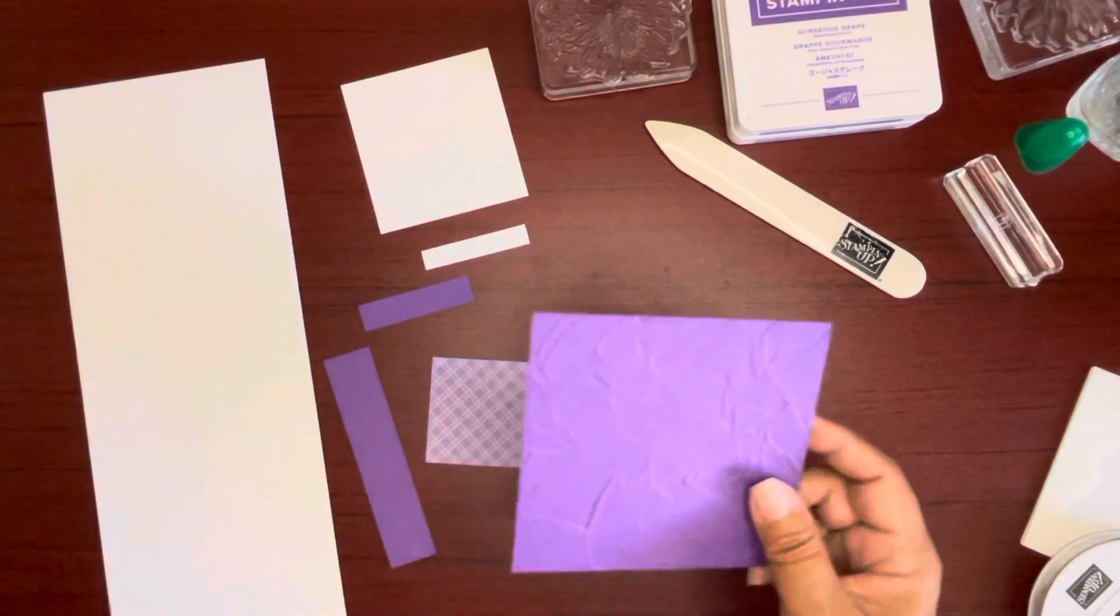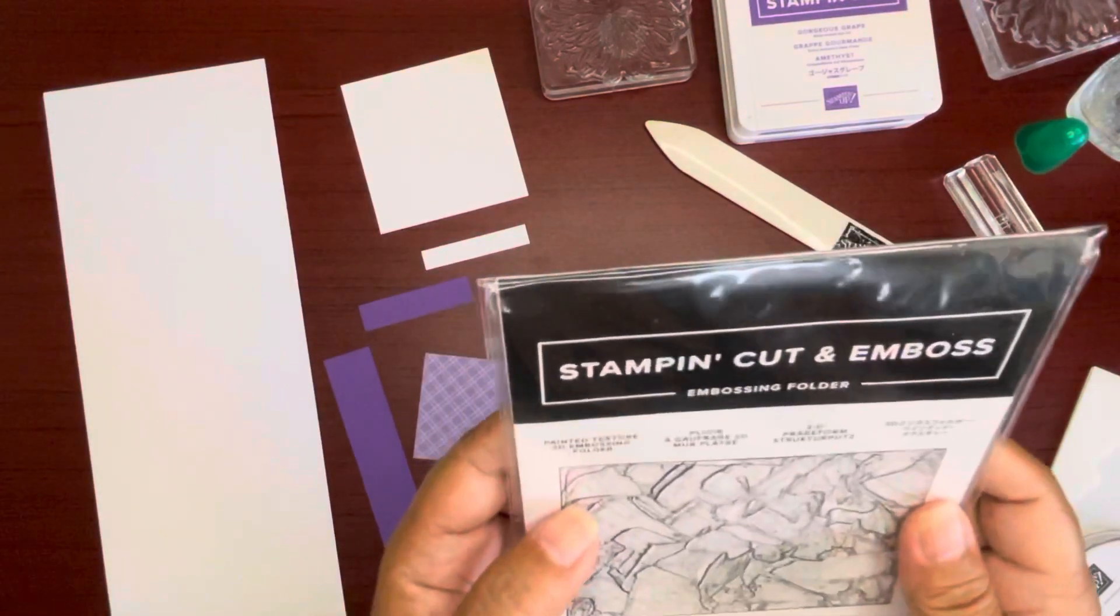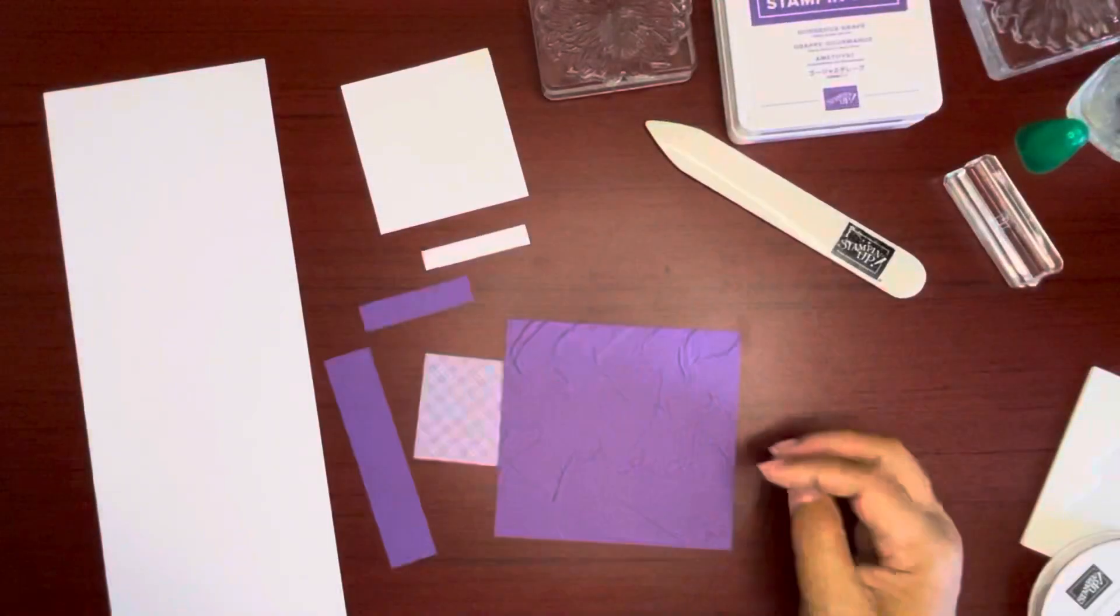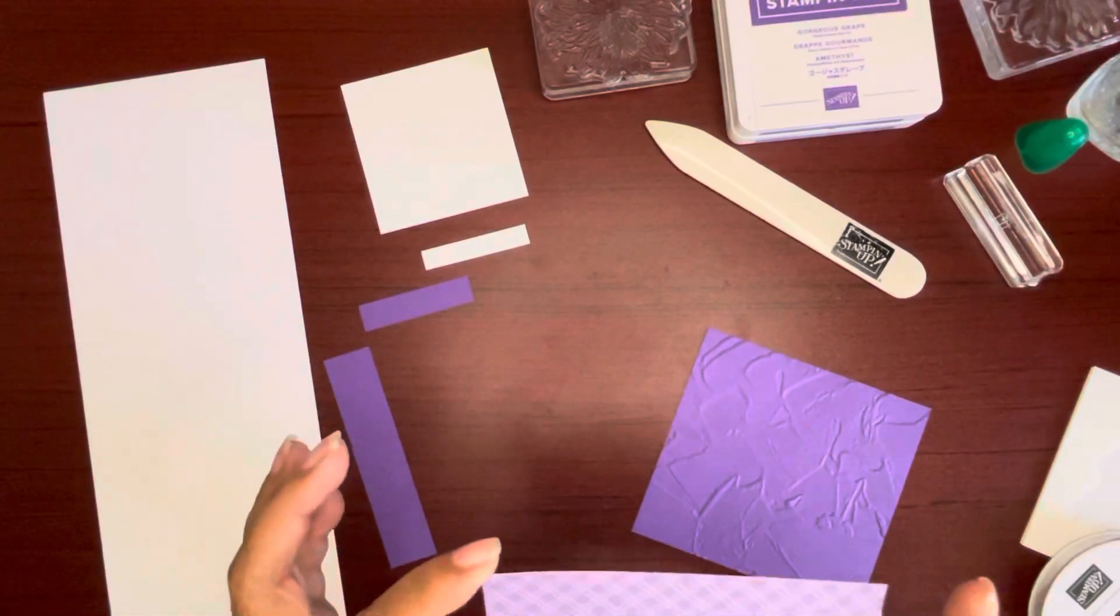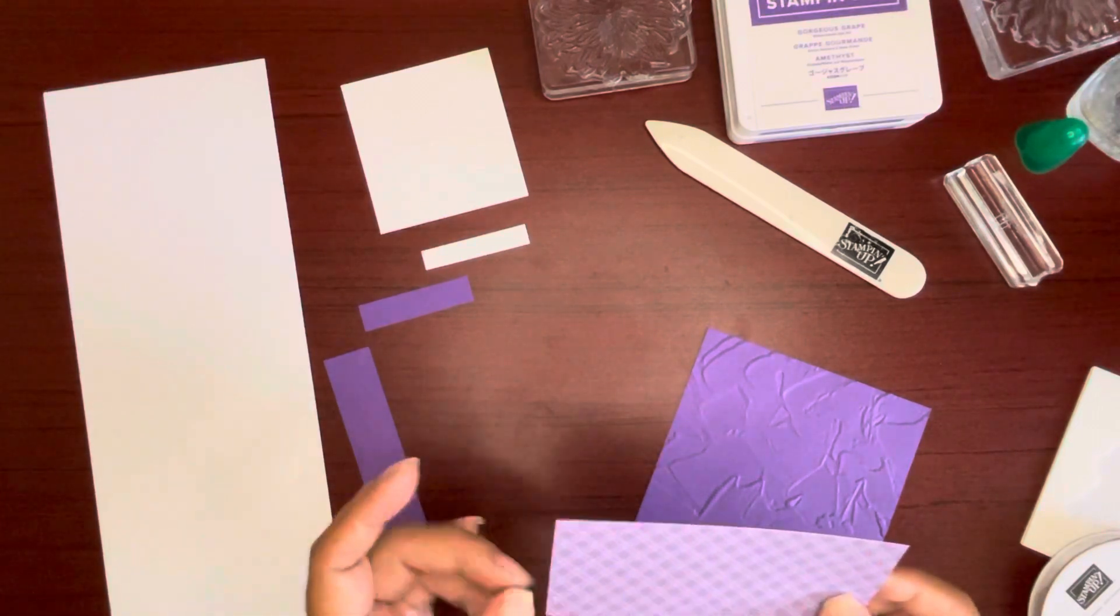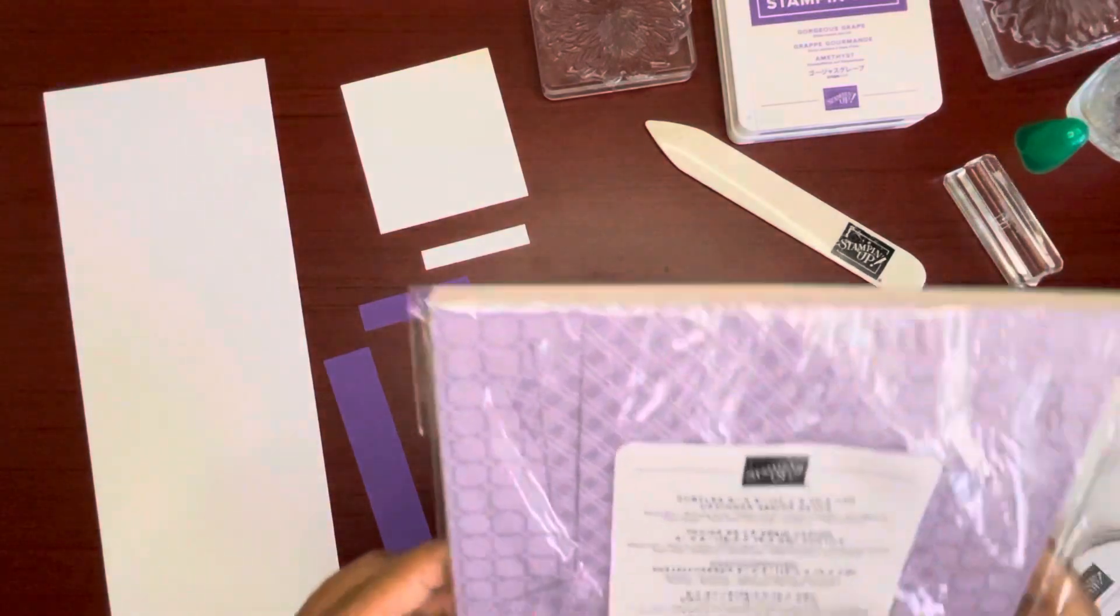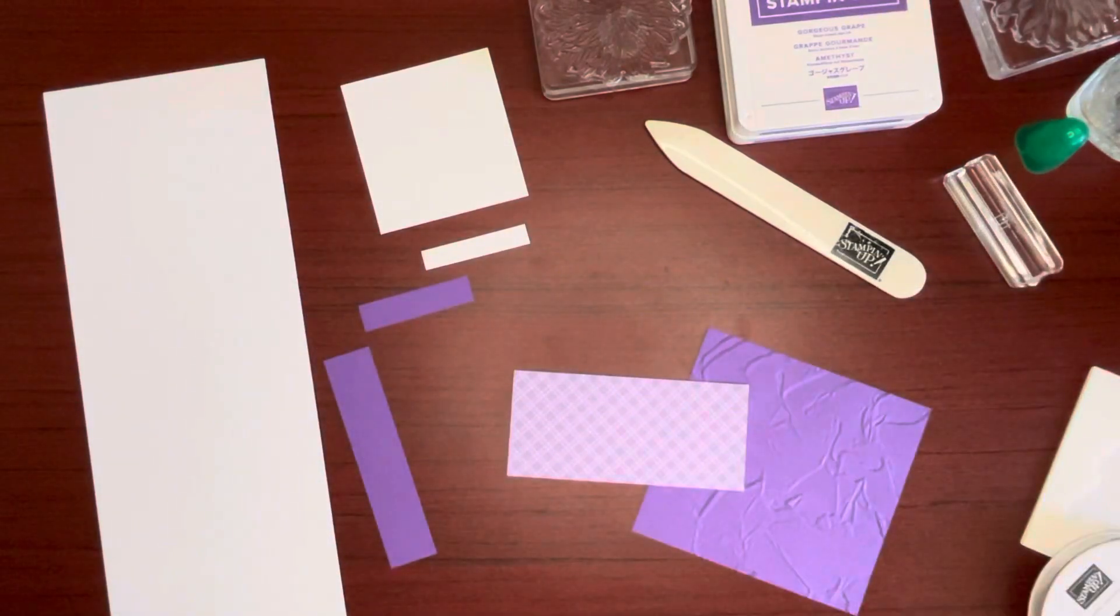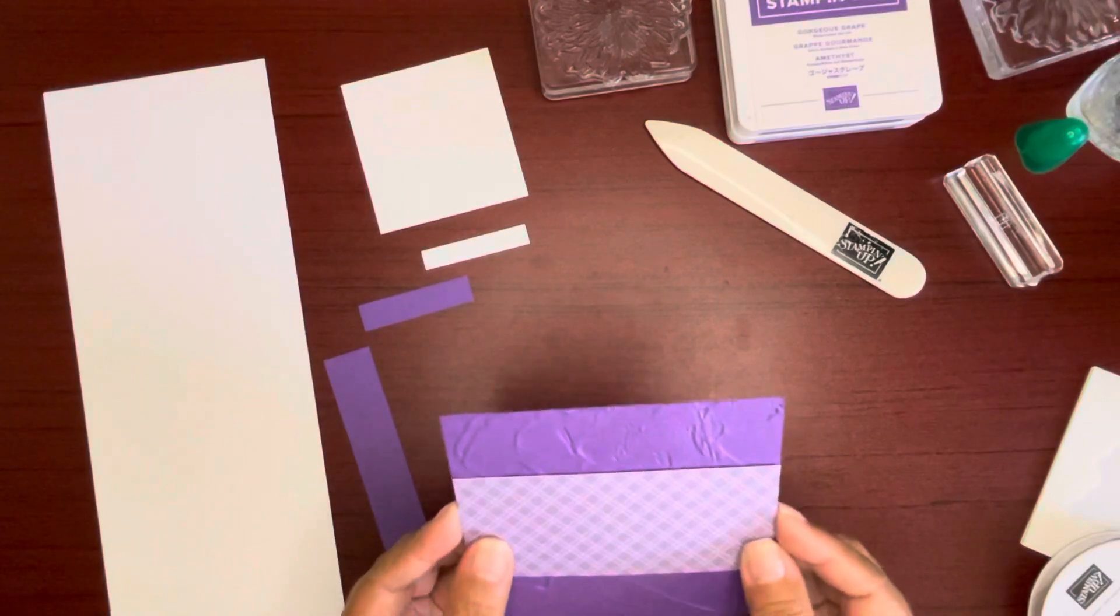And this here I ran through the Stampin' Cut Embossing Folder Painted Texture. It's a 3D embossing folder. And then I have a piece of designer series paper. This one here is cut at two by four and three eighths and is from the Suttles pack, six by six pack. And that is the Highland Heather. Okay. And that is actually going to layer right on top like this. That's why it's four and three eighths.